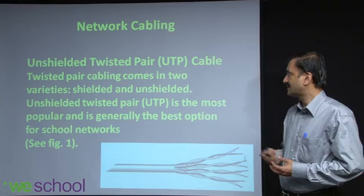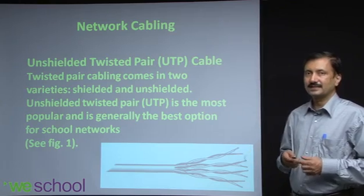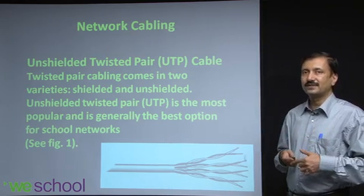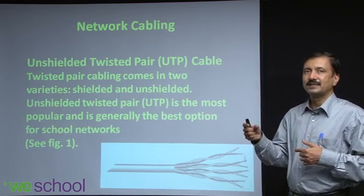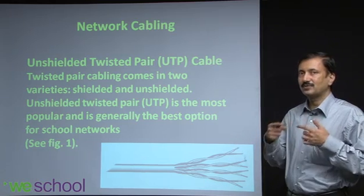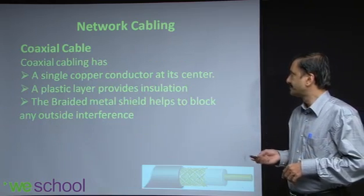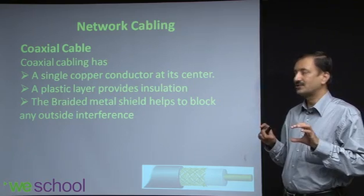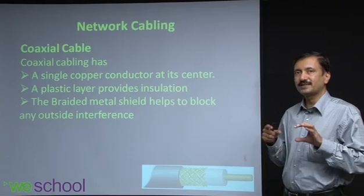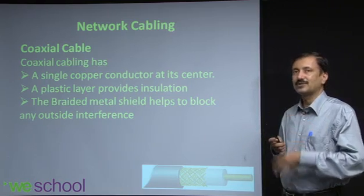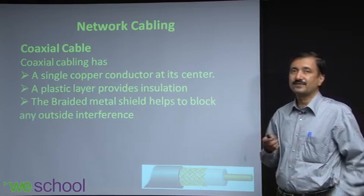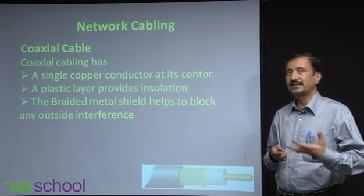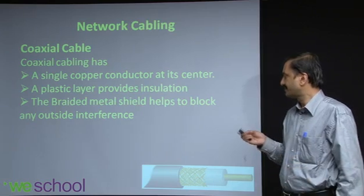Twisted pair - unshielded - is not well protected, so one limitation is length, but it's also limited in terms of protection. It's subject to damage and subject to interference from other signals - for example, if there's an electric motor running nearby, there's a good chance the cable will pick up those frequencies and distort the signals. Coaxial cable has a copper conductor at the center, a plastic layer on top as insulator, and above that a braided metal shield which protects it from physical damage and prevents outside interference. So for example, if you're computerizing a factory, you'd run a coaxial cable which is sturdier, and you can have an additional shielded cable for further protection.